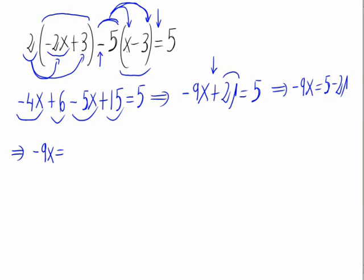This gives minus 16. So now to totally isolate the x, we take this negative 9 which is multiplying to the other side dividing. x equals negative 16 over negative 9.